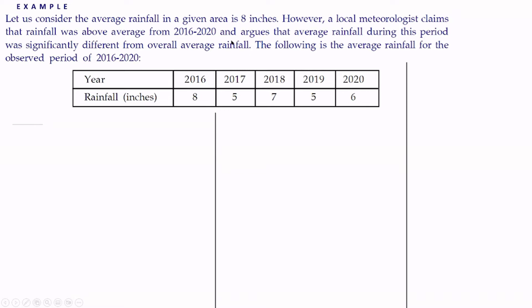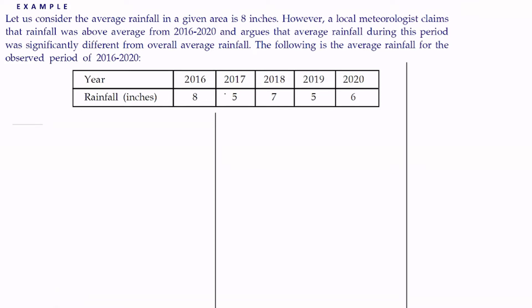Here we have the hypothesis. A local meteorologist claims that the average rainfall during this period was significantly different from the overall average rainfall, so this is the population mean μ. We have to test whether the average rainfall during this period was significantly different from the overall average rainfall or not. When the level of significance is not given we can use α = 5%. So let us assume α = 5%.